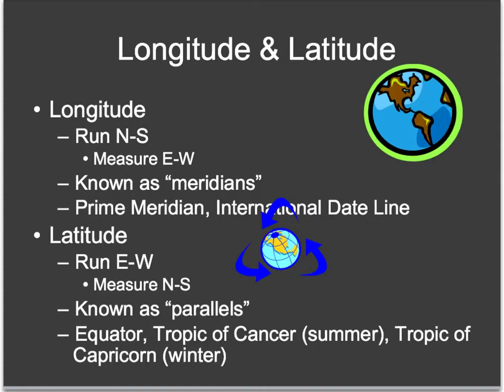Talking about longitude and latitude. Longitude are the lines that run north-south, but they're going to measure east and west, because they're going to move from side to side measuring east-west. These lines specifically are called meridians in general.